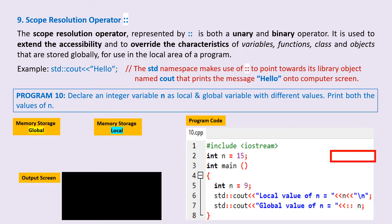On line 2, we declare integer variable n with value 15. Since it's declared outside the main function, this variable named n will be the global variable. So it's stored in the memory storage unit for global variable named n.